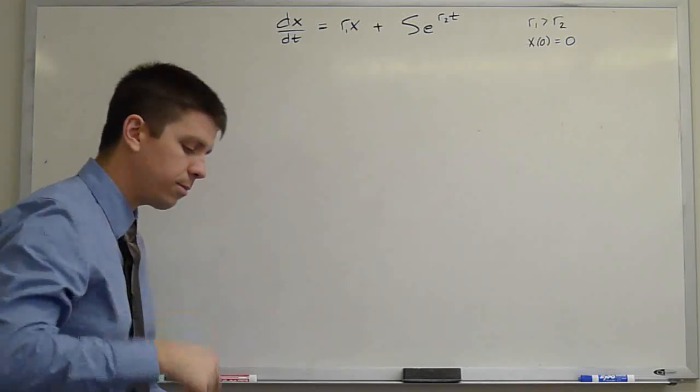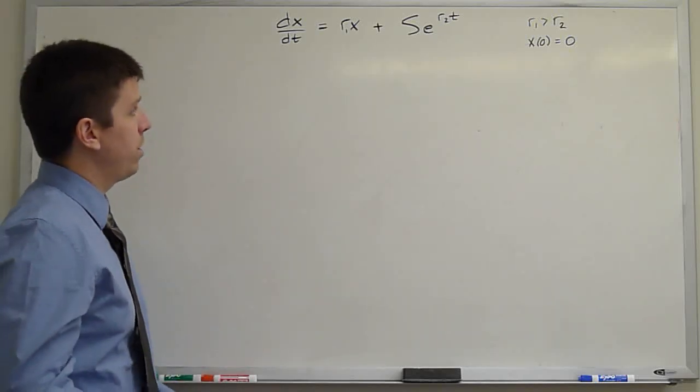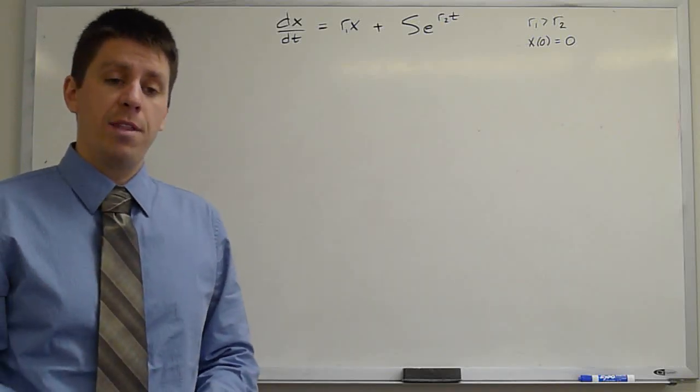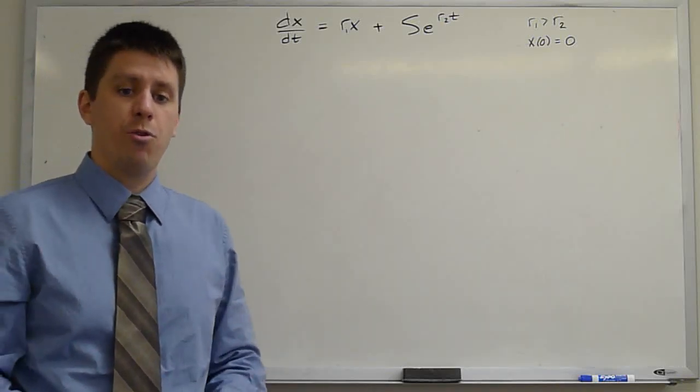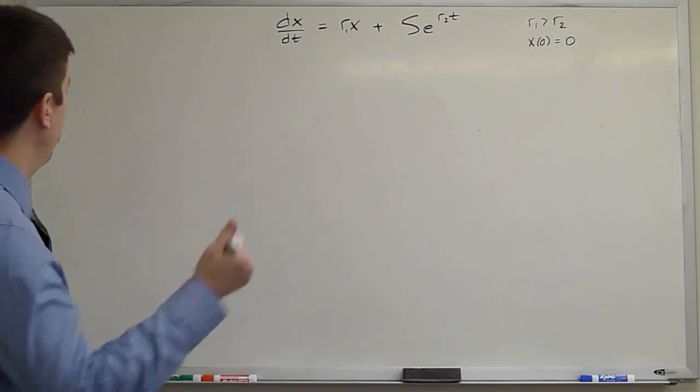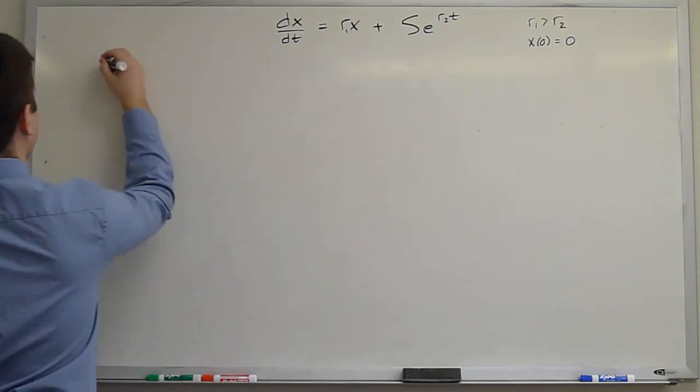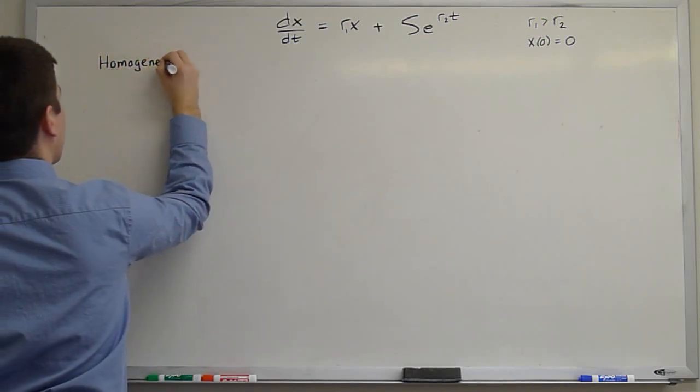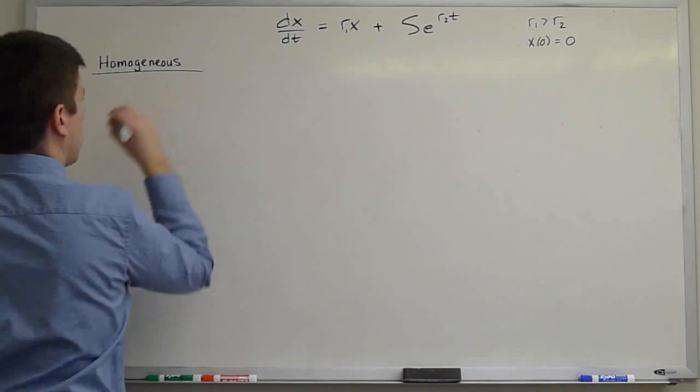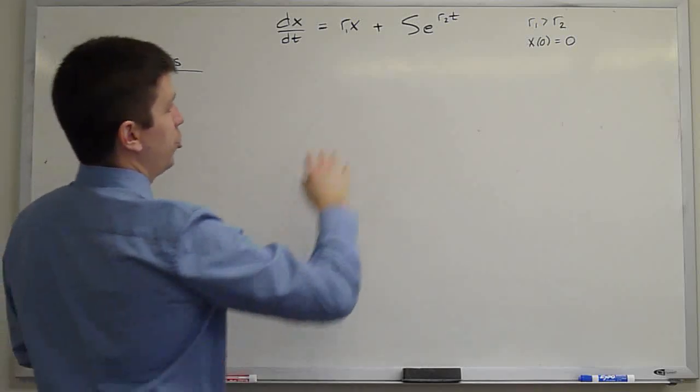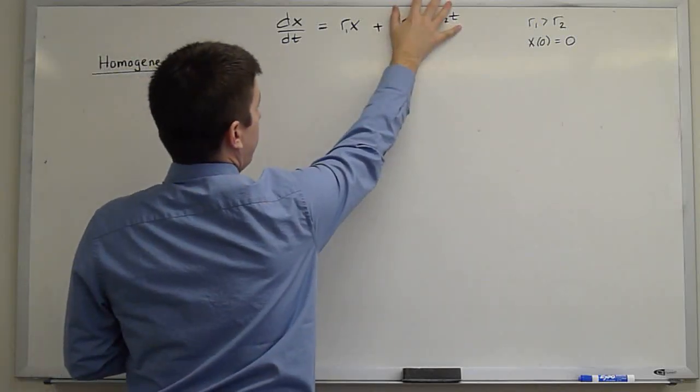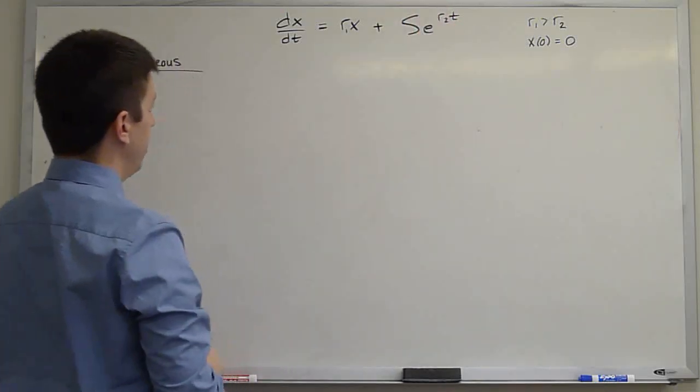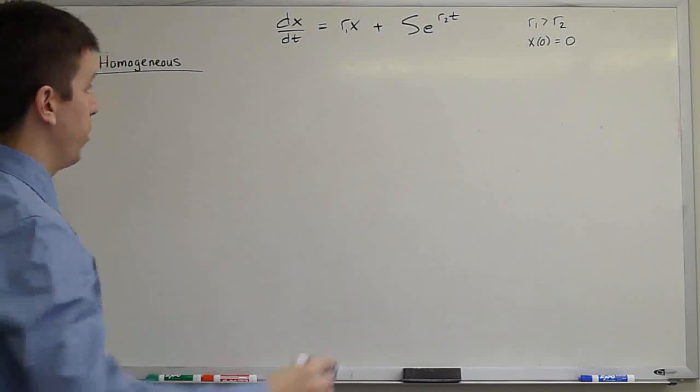So in this video, we will solve this equation by first solving the homogeneous solution and then finding the particular solution and combining them to form a general solution. So let's start with the homogeneous solution. The homogeneous solution would involve ignoring the forcing term, the associated homogeneous equation in which the forcing term is neglected. And we can solve that by separation.